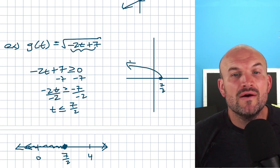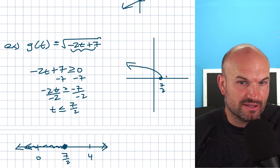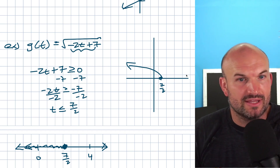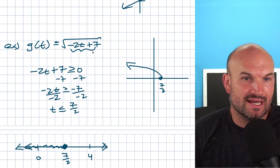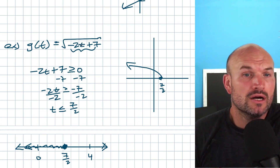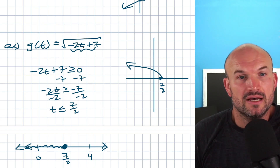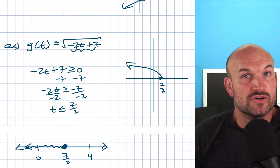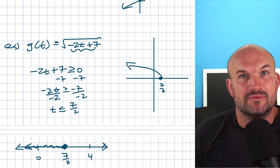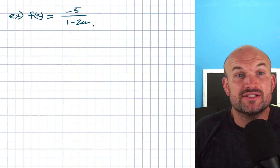You can verify: if you plug in 4, which is greater than 7/2, you get (-2)(4) + 7 = -8 + 7 = -1 under the radical. That's not going to work — confirming that values greater than 7/2 are not in the domain.